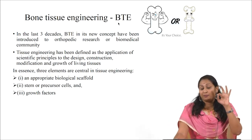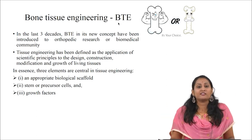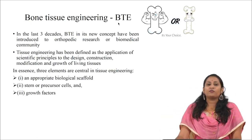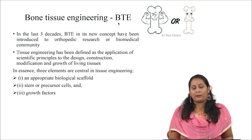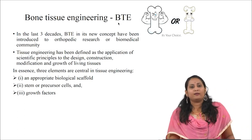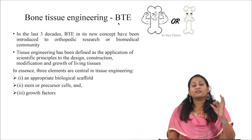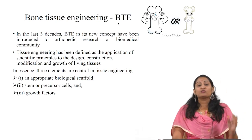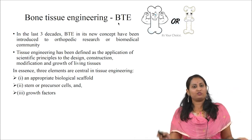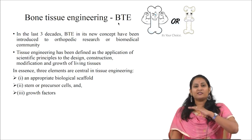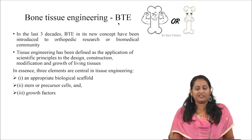There are three major elements present in tissue engineering which comprise the tissue engineering triad. The first element is the biological scaffold, which is the biomaterial; the second one is cells; and the third one is growth factors. Scaffold, cells and growth factors all together make up the tissue engineering triad.